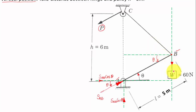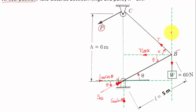When load W acts downward, the string develops tension T acting at a certain angle alpha with the horizontal. The horizontal component is T·cosα directed towards the left-hand side, and the vertical component is T·sinα acting upward.